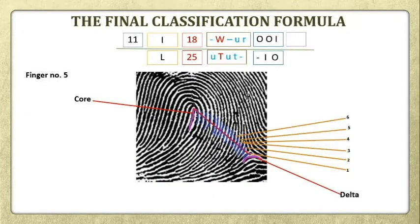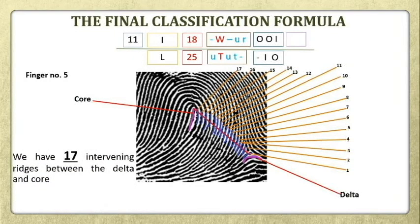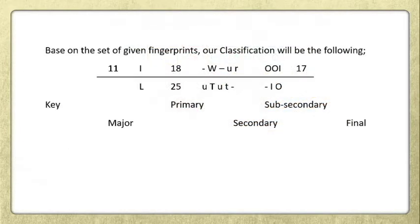Always remember: right-left and left-right. That is, for the right little finger's whorl you count from the left delta, and for the left little finger's whorl you count from the right delta. Based on our given fingerprints, the key classification is 11.